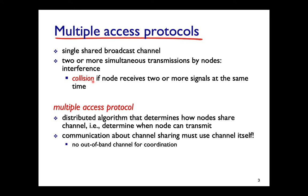In computer networking, you don't try to prevent simultaneous transmissions entirely. Instead, if collisions happen you recover from them through retransmissions. Multiple access protocols are distributed algorithms where each device makes its own decisions. This is challenging because coordination must happen in-band — using the same channel you are trying to share.